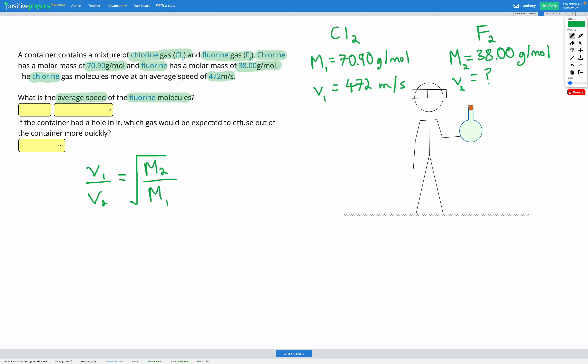So first I'm going to multiply everything by V2 to get V2 on the top. Then in order to get rid of the root M2 over M1, I'm going to multiply everything by root M1 over M2, which is the opposite of that. That's going to cancel out over here,